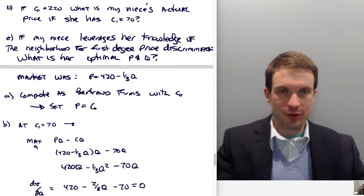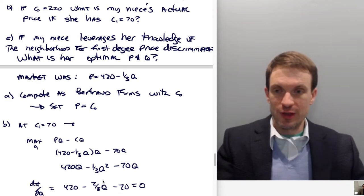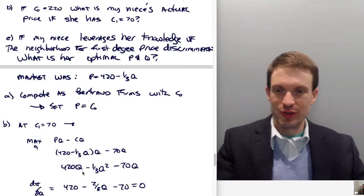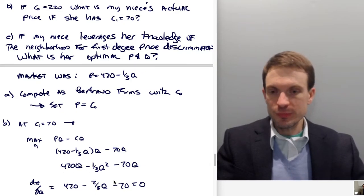420Q - (1/3)Q² - 70Q. Differentiating with respect to quantity gives us 420 - (2/3)Q - 70 = 0. As you're realizing, this is marginal revenue, and you might have taken a shortcut. If this is the market demand, marginal revenue has the same intercept, 420, and twice the slope, 2/3. Why? Because of this differentiation. This 2 is always there, and the derivative always gives us 2 times whatever that slope is.